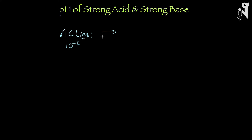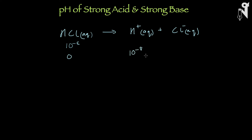We know it's a strong acid, and it is so dilute that it is fully going to break up into its ions. What you get ultimately is no HCl remaining, and all of it has converted to H⁺. So 10 to the power minus 8 H⁺ and 10 to the power minus 8 Cl⁻. So is the concentration of H⁺ equal to 10 to the power minus 8 in the solution? No, it is not.